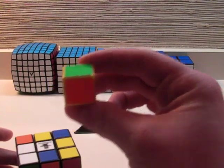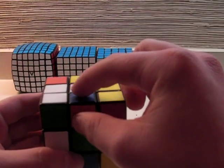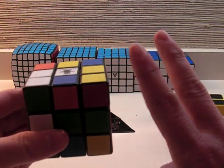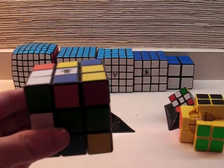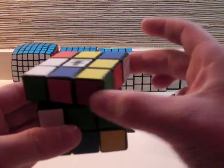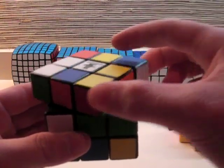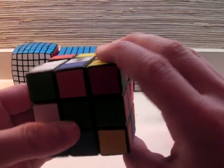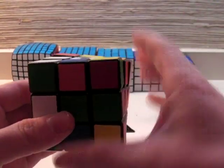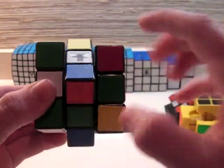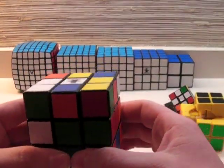So an edge piece, since it has two colors, I'll take this one for example, there's only two moves that you can do that will move this piece. In this case, you can only do the up face, see how the piece moves, and you can do the front face, the piece will move. But if you do any other move, that piece will always stay there.